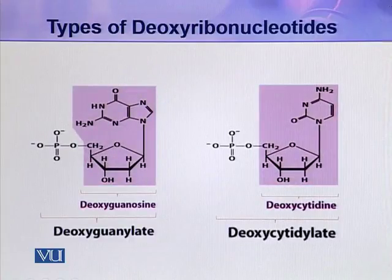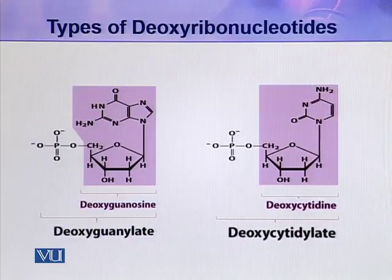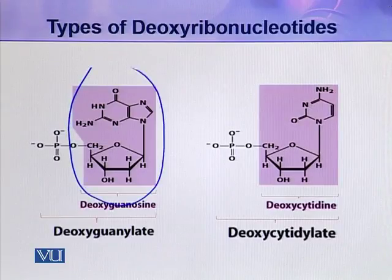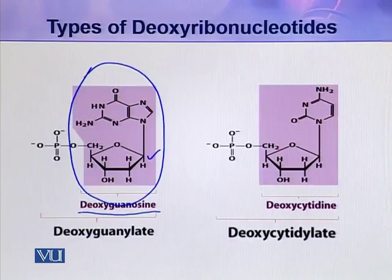There are the other two types of deoxyribonucleotides, because only four types of nitrogenous bases are present in the DNA molecule: adenine, guanine, cytosine, and thymine. In the third type of deoxyribonucleotide, the colored portion contains a pentose sugar and the nitrogenous base guanine. So this nucleoside is called deoxyguanosine. If this nucleoside also contains a phosphate group, it becomes a nucleotide called deoxyguanylate.